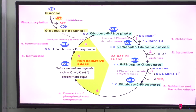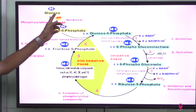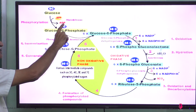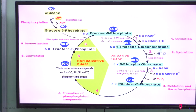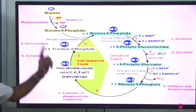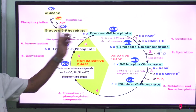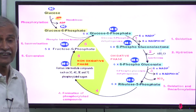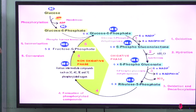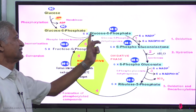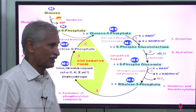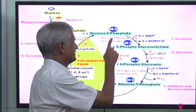In the pentose phosphate pathway, the glucose molecule takes one ATP and gets phosphorylated, releasing ADP by hexokinase. All glucose 6-phosphate produced enters this pathway. Starting with 6 molecules of glucose 6-phosphate, we have 36 carbons. The key enzyme acting here is glucose 6-phosphate dehydrogenase.